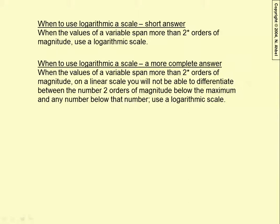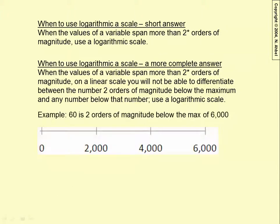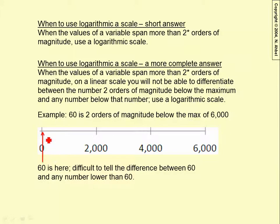When the values of a variable span more than two orders of magnitude, on a linear scale, you will not be able to differentiate between the number two orders of magnitude below the maximum and any number below that. In those circumstances, use a logarithmic scale. Here's an example: the maximum number on the scale is 6,000. One order of magnitude below that is 600, and one order of magnitude below that is 60. Well, 60 is here, and it's difficult to tell the difference between 60 and any number lower than 60.